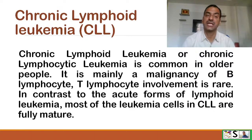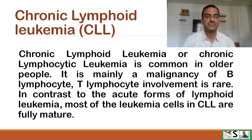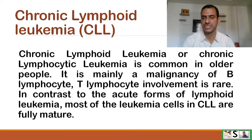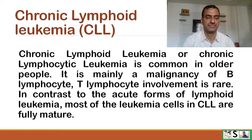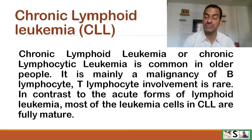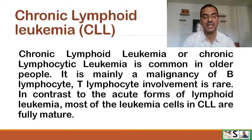The next type is chronic lymphoid leukemia, or CLL — also called chronic lymphocytic leukemia. It is quite common in older people and is mainly a malignancy of B lymphocytes. T-lymphocyte involvement is very rare. In contrast to the acute form, most leukemia cells in CLL are fully mature.